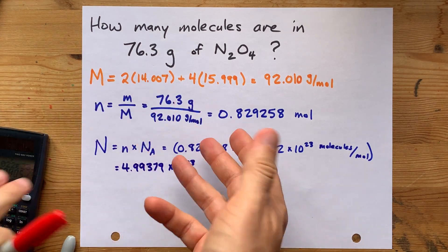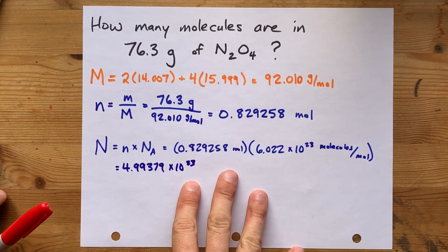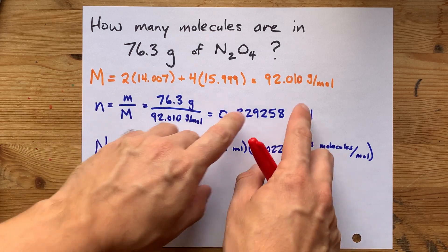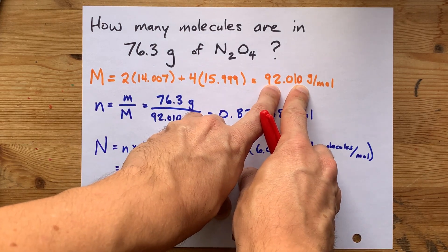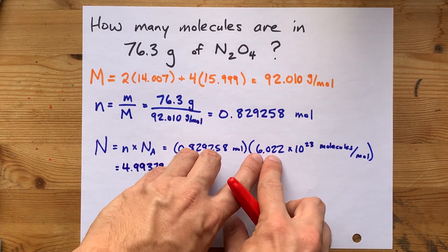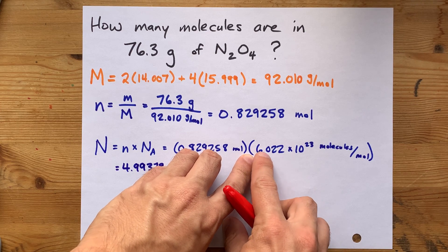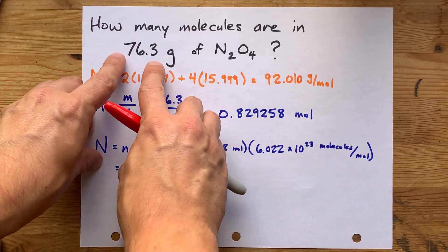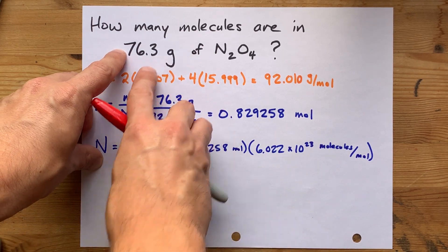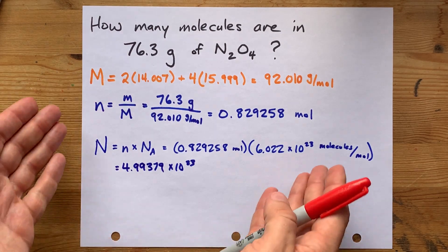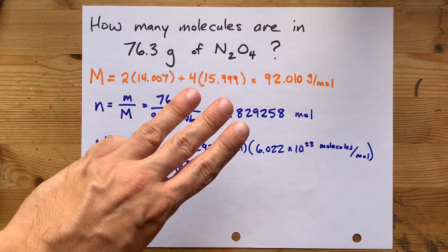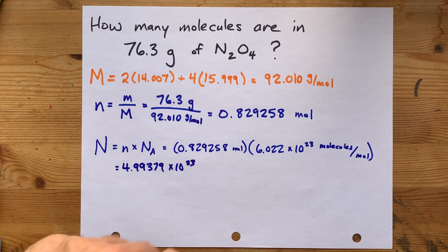But again, sig figs or significant figures are important in chemistry. So, this one had 5 significant figures. Avogadro's number here had 4 significant figures. 1, 2, 3, 4. The original number we were given only had 3 significant figures. So, the fewest of all of those is 3. Your final answer needs 3 significant figures.